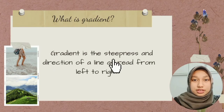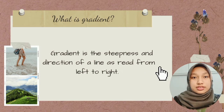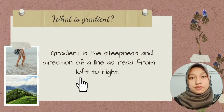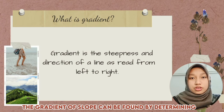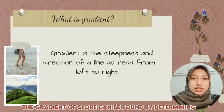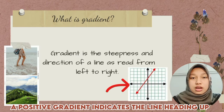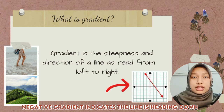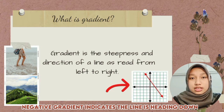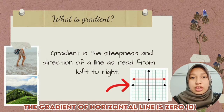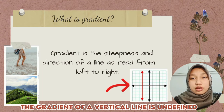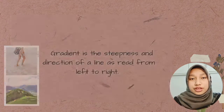Gradient is the stiffness and direction of a straight line from left to right. The gradient or slope can be found by determining the ratio of the rise to the run between two points of a line. A positive gradient indicates the line is heading up, and a negative gradient indicates the line is heading down. The gradient of a horizontal line is zero, while the gradient of a vertical line is undefined.